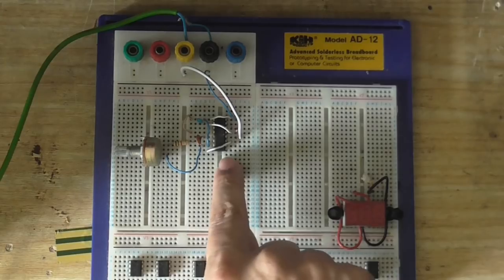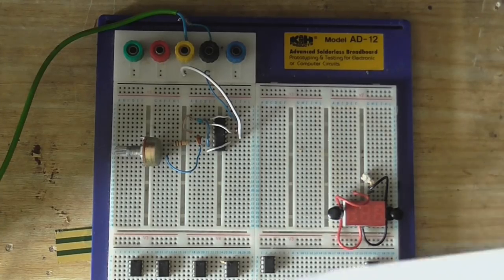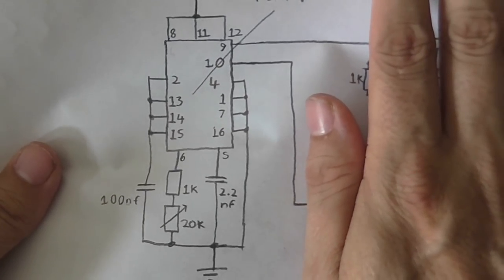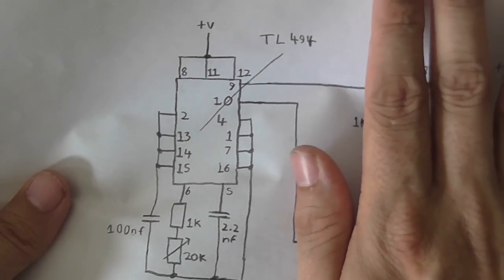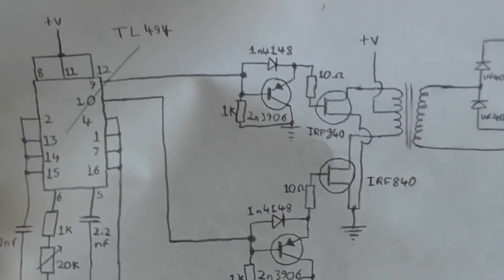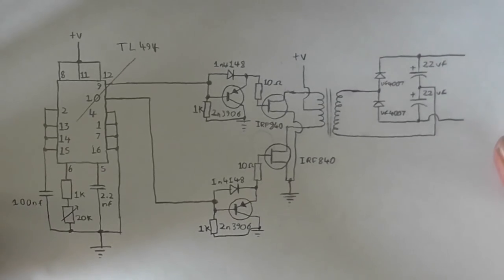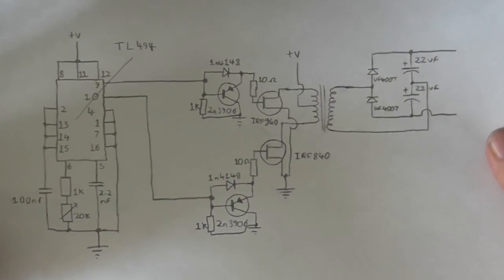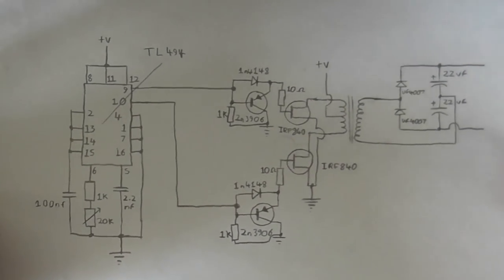I still have the TL494 on there from one of the previous experiments. But it's wired up like this at the moment. This is going to be my high voltage power supply for the high voltage that the tube needs.